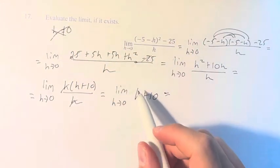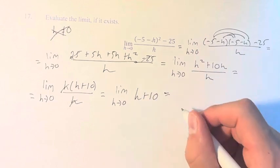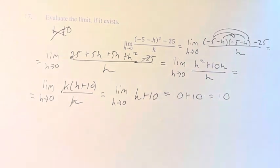And since we no longer have a division by 0, we can just plug in 0 directly. 0 + 10, which is equal to 10. And therefore the value of this limit is equal to 10.